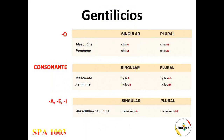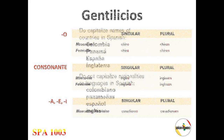There are a few adjectives of nationality that end in E or I. In those cases, there are only two forms: one for the singular (either female or male), and another for the plural (either female or male). For example, for a Canadian man we say canadiense, and for a Canadian woman we also say canadiense. For the plural, canadienses for men or for women.